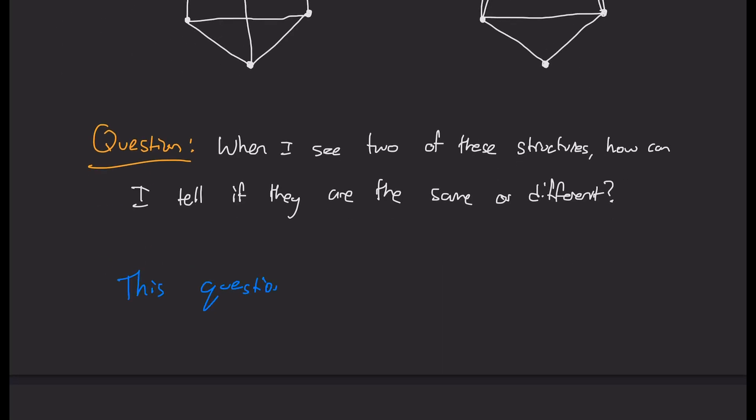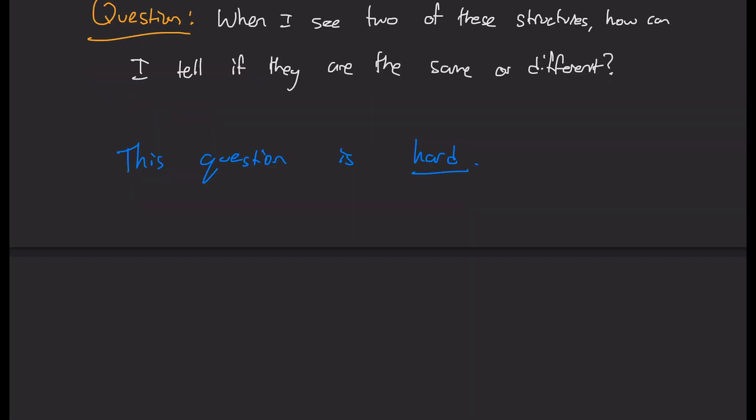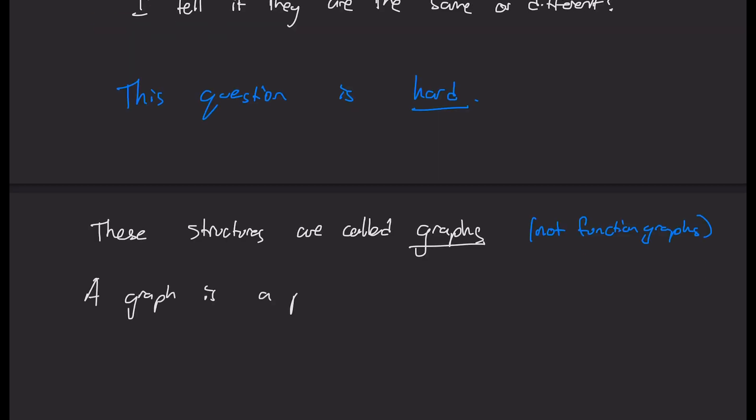So it turns out that this question is hard. But before we move on, let's just define what we're even talking about. So these structures are called graphs. And no, they're not the same thing as function graphs. A graph is simply a pair V, E, where V is a set of points called vertices, and E is a set of lines connecting two points called edges.